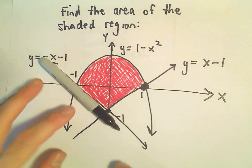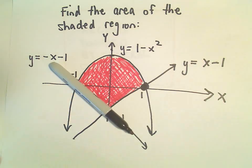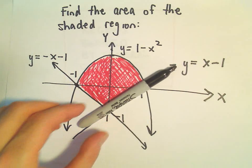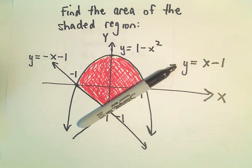And then this line here will be the line y equals negative x minus 1, and then the line here will be the line y equals x minus 1.